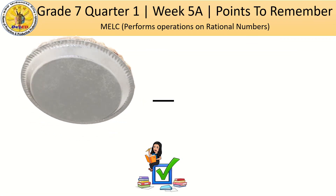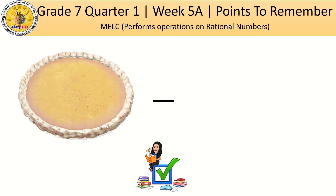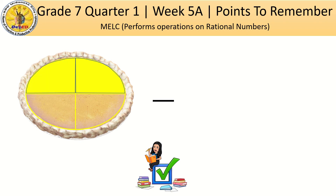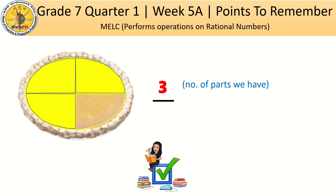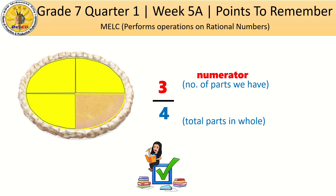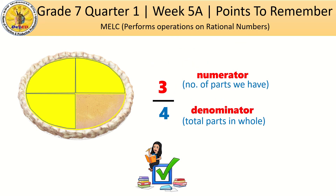So we have here a pie. If I'm going to cut this pie into 4 — the first piece is for my brother, the second one is for my sister, and the third one is for me. So how many pieces do we have? We have 3 pieces. 3 is the number of parts we have, and we call it the numerator. 4 is the total parts in a whole — that is the denominator.